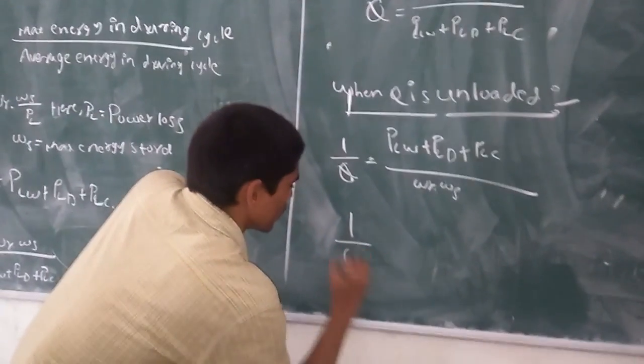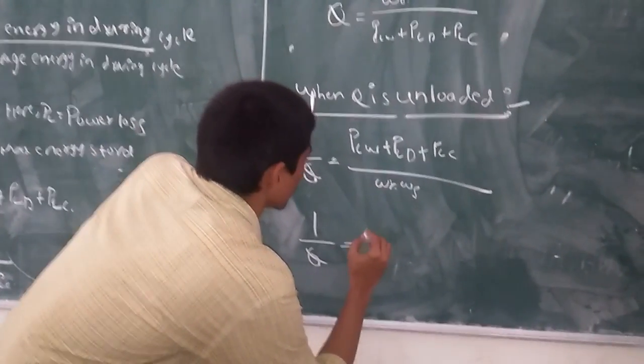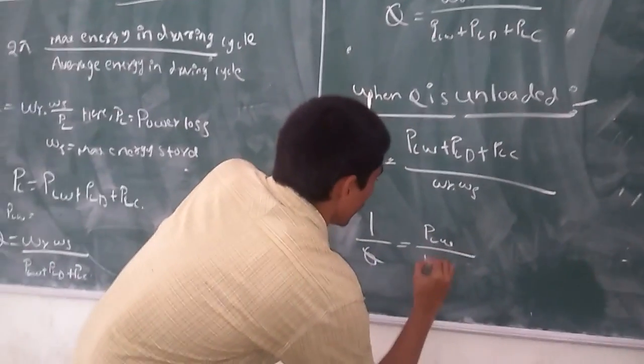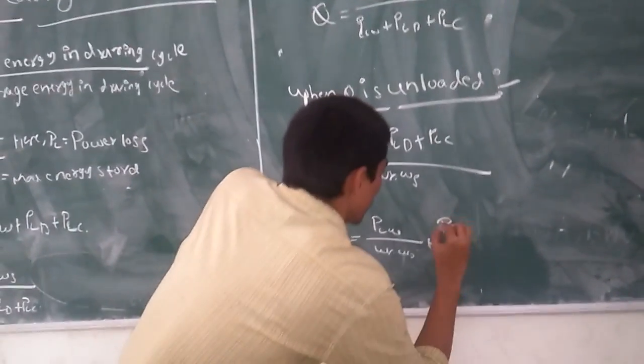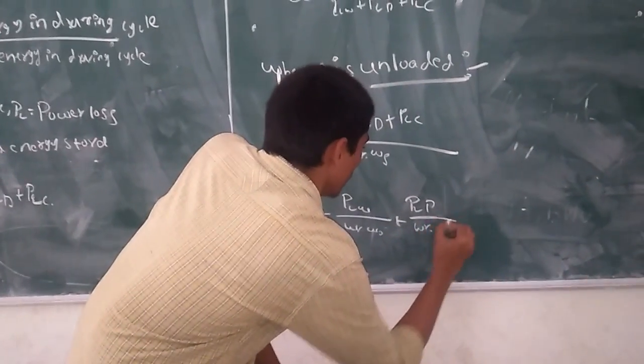Finally it comes as PL omega r into omega s plus PLW into omega r into omega s plus PLD into omega r into omega s.